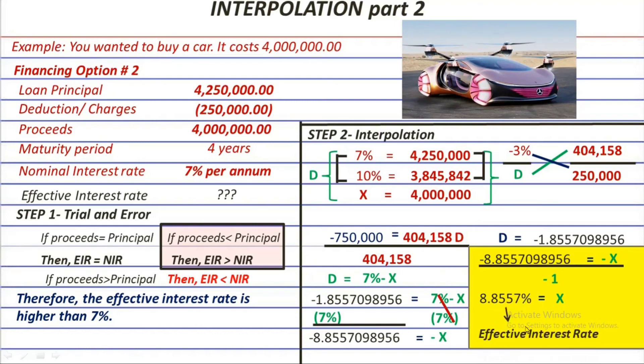8.8557% is already the effective rate — those are the steps for interpolation. But before we conclude, we should check if this answer is really correct. That checking will be on the next episode to keep this video short. If you learned something, please like, subscribe, and hit the notification bell, selecting all to be updated on my next videos. Thank you for watching and see you on the next one.